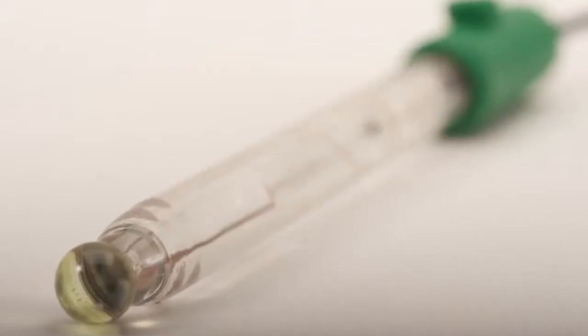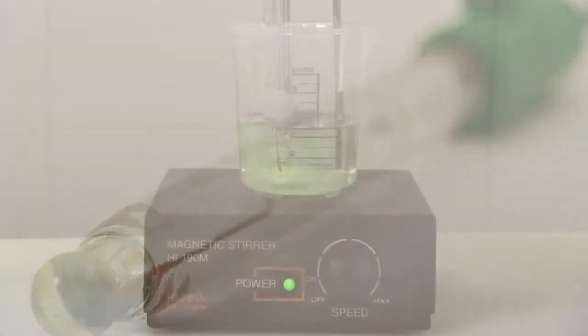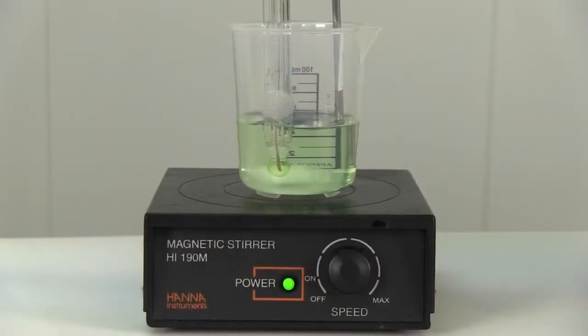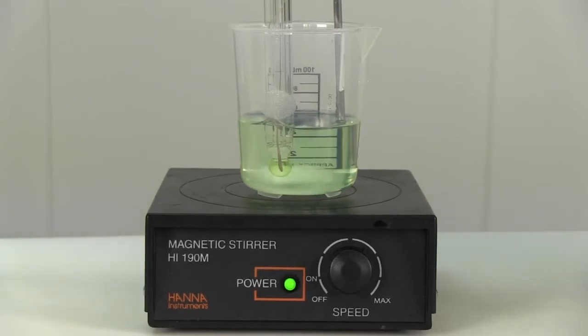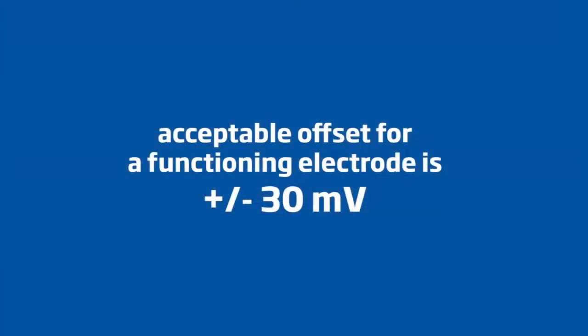Let's begin by determining the offset of our electrode, in this case the HI1131B. To determine the offset, check the millivolt reading of the pH electrode in a pH 7 buffer. An acceptable offset for a functioning electrode is plus or minus 30 millivolt.